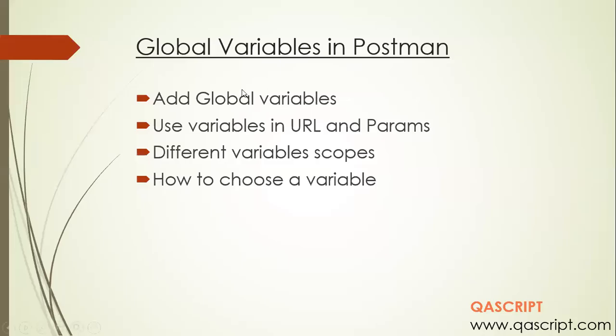Hey guys, welcome back. So in the previous videos, we looked at how we can create our first API request, and once we send this request, how to visualize the response in the Postman tool. Right now, we are going to look at one of the important concepts in API automation — how you can replace those static values used in APIs with variables. We are going to look at a specific variable called global variables.